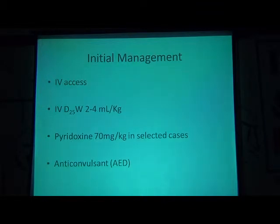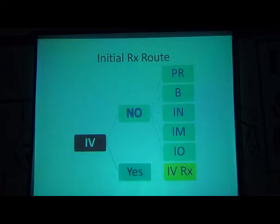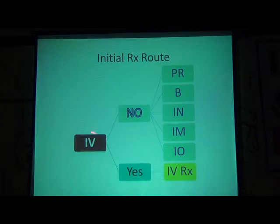Initial management: first establish IV access. Give dextrose 25% at a dose of 2–4 ml per kg. Then pyridoxine 70 mg per kg in selected cases. Then use anticonvulsants. If IV access is established, continue with the IV route. If the IV line cannot be secured — which is common in pediatrics — we can use rectal diazepam, buccal midazolam, intranasal midazolam, intramuscular lorazepam, or the intraosseous route by introducing a bone marrow needle into the tibia and connecting the IV line through that.